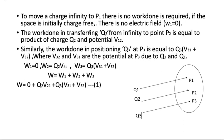The work done in transferring q2 from infinity to point p2 is equal to the product of charge q2 and potential v12, where v12 is the potential at p2 due to charge q1. Similarly, the work done in positioning q3 at p3 is equal to q3 times the quantity v31 plus v32, where v31 and v32 are potentials at p3 due to q1 and q2 respectively.